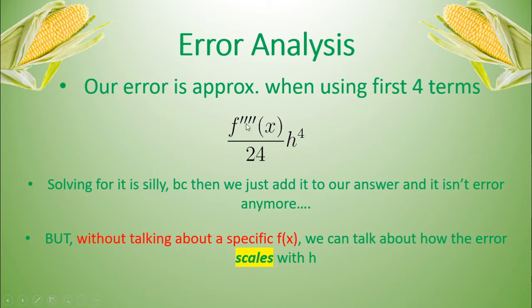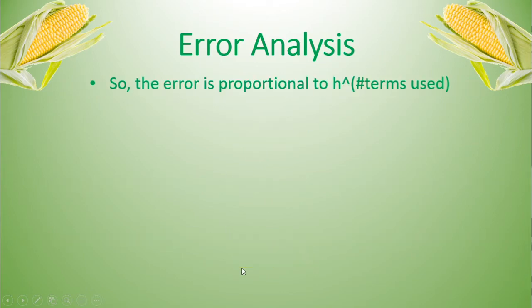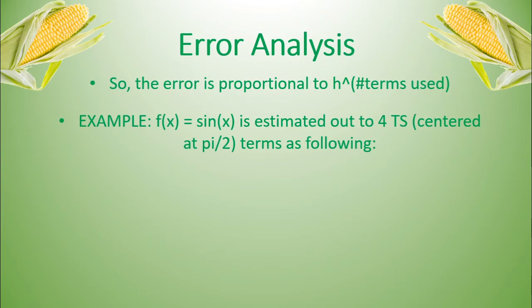So without talking about a specific f(x), because this scaling applies for any function that we give it, we could talk about how the error scales with h. So the error is going to always be proportional to h to the number of terms used. Because for instance, if we took out the five terms, then the next term would have been the h of fifth term. So h to the fifth. And so the error is always going to be proportional to h, the number of terms used.